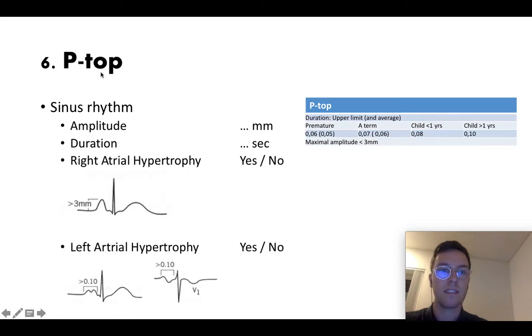Then step six, look at the P-tops. First of all check if it's in sinus rhythm. If it is, check the amplitude of your P-tops, the duration of them in seconds. Check if there is right atrial hypertrophy. You can see this if the P-top is higher than three millimeters as this figure shows. Or check if there is left atrial hypertrophy which is when the P-top takes more than 0.10 seconds. Here again I added some normal values.